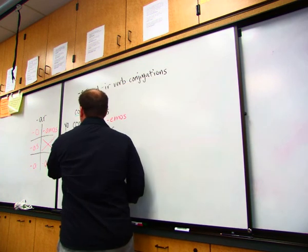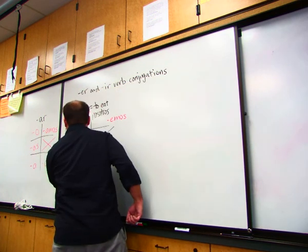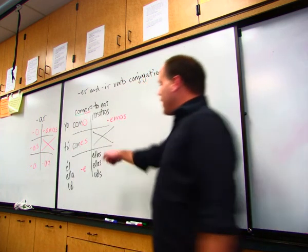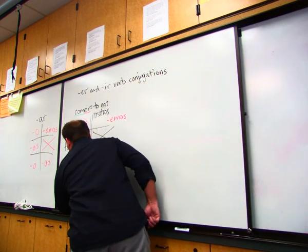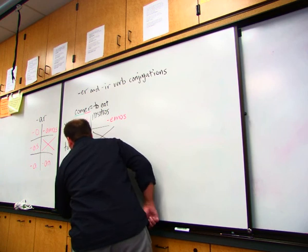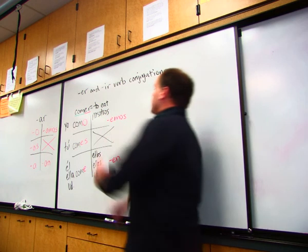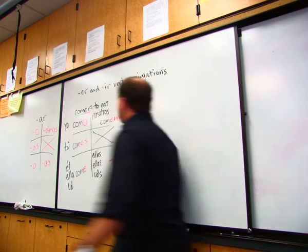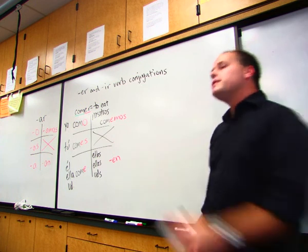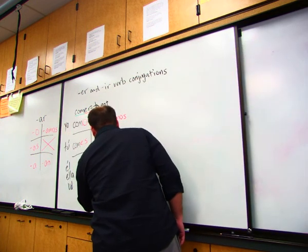If I say yo como el almuerzo, that means I eat lunch. The tu form, if we want to say you eat. Tu comes. El, ella, usted, he, she, or you eat, we say come. El come, ella come, usted come. Nosotros, we eat, is comemos. Nosotros comemos. Ellos, ellas, ustedes, comen. There you go. So that's how we use it.